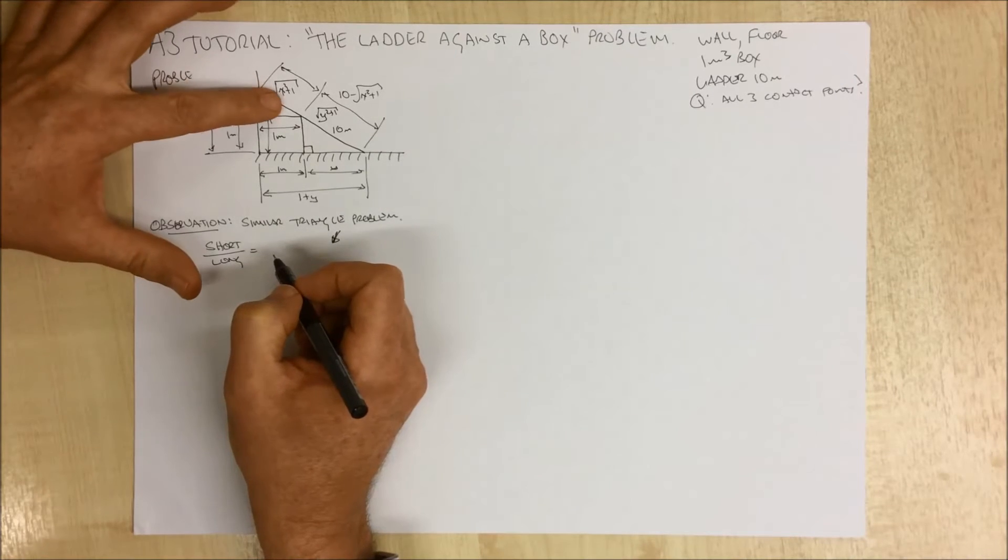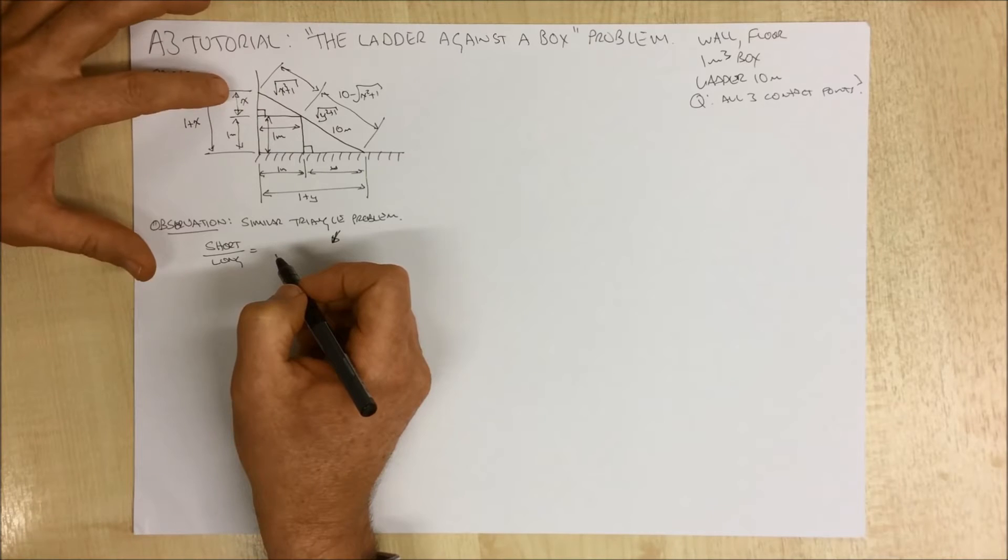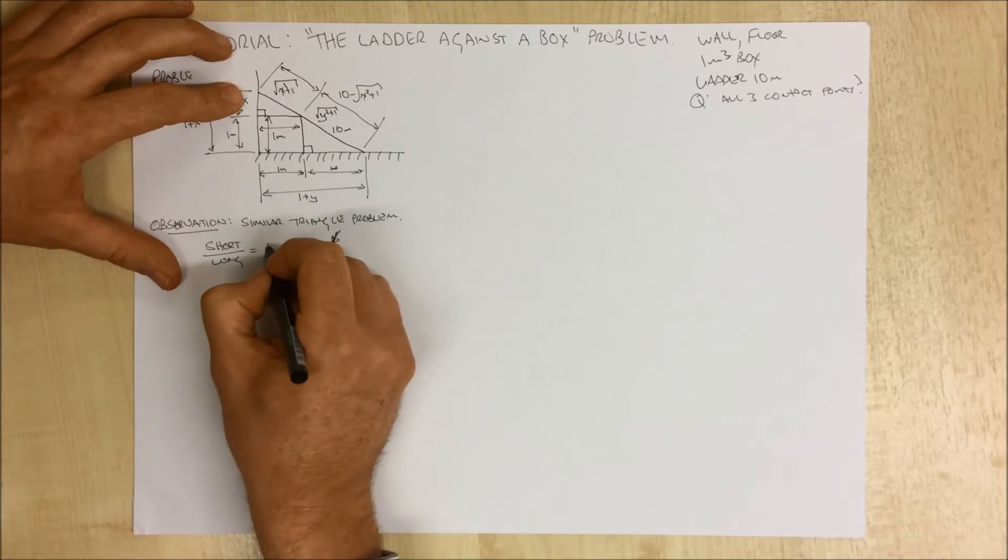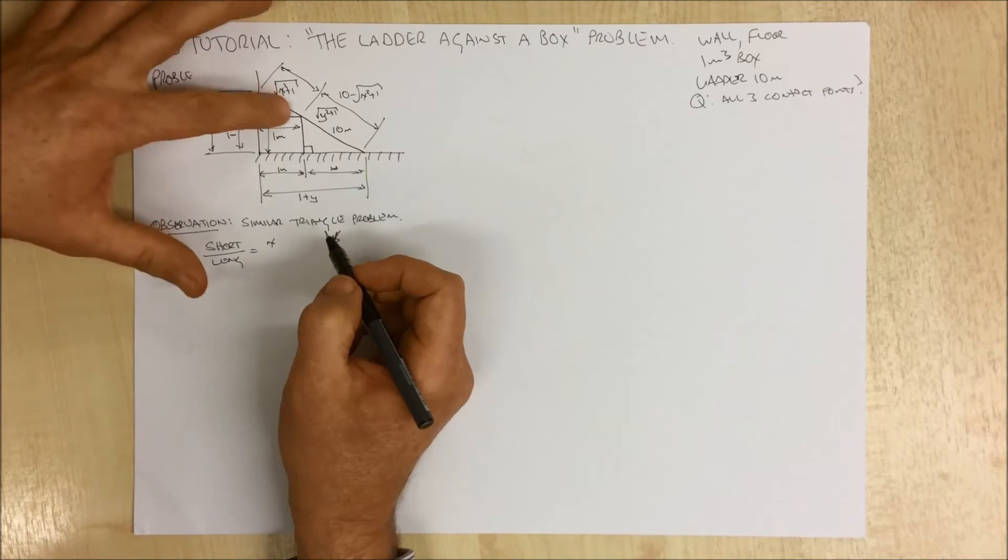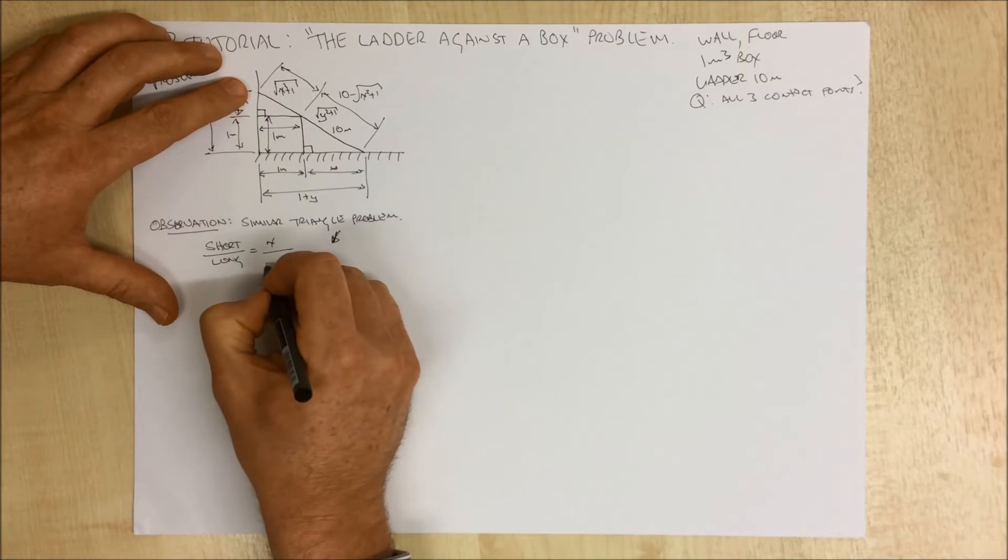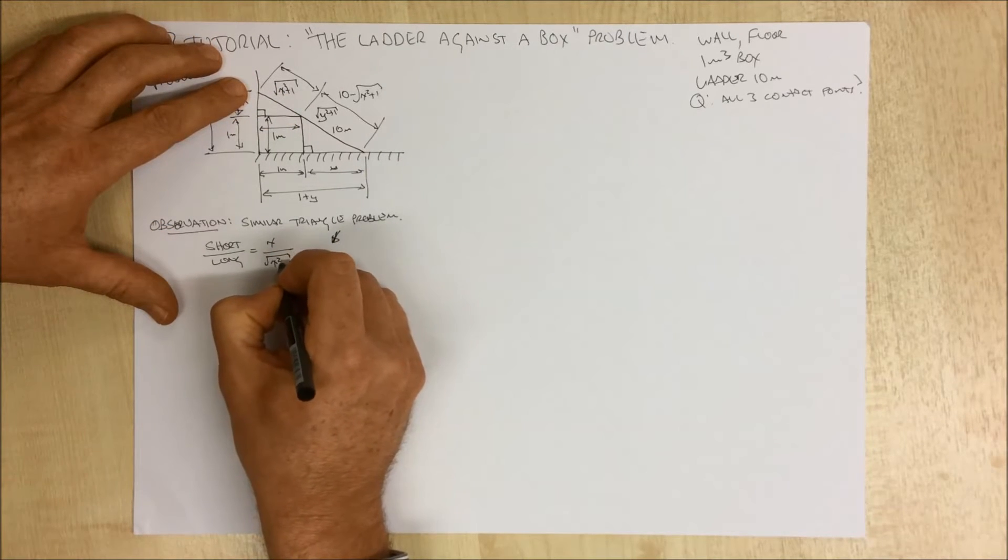So if we look at this triangle up here, we can see that the short leg we're going to call x, and the long leg, which is the hypotenuse of the triangle, is the square root of x squared plus 1.